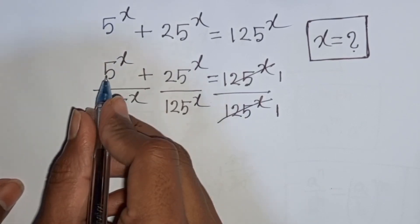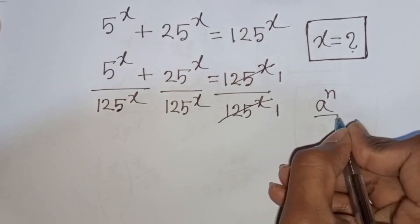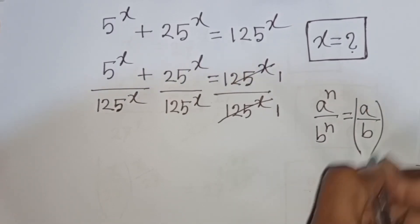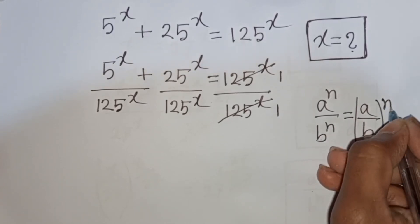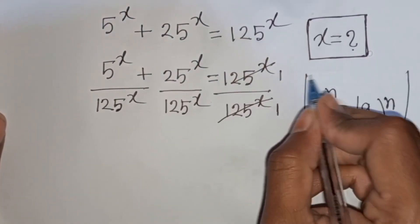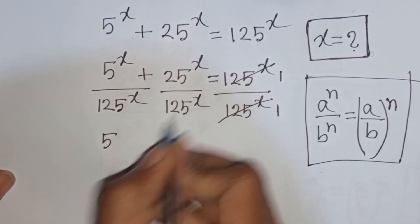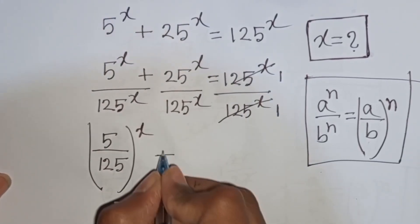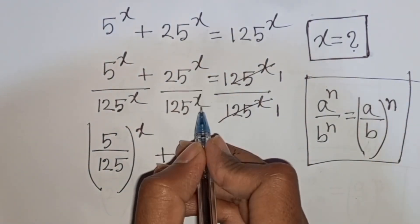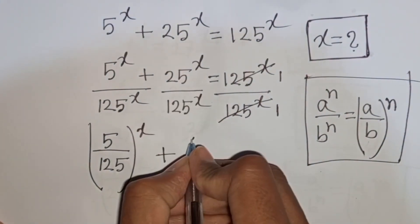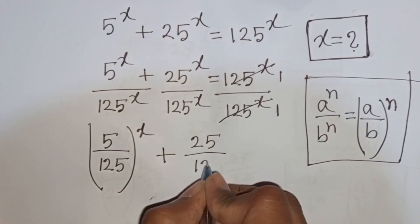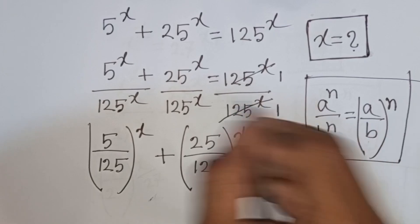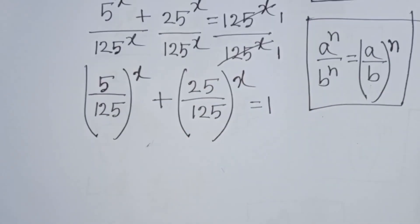From here we see x is the same power but different base. Remember this formula: a power n divided by b power n is equal to (a divided by b) bracket common power n. That means same power but different base. So according to this exponential rule, we can write here (5 divided by 125) power x plus (25 divided by 125) power x is equal to 1.